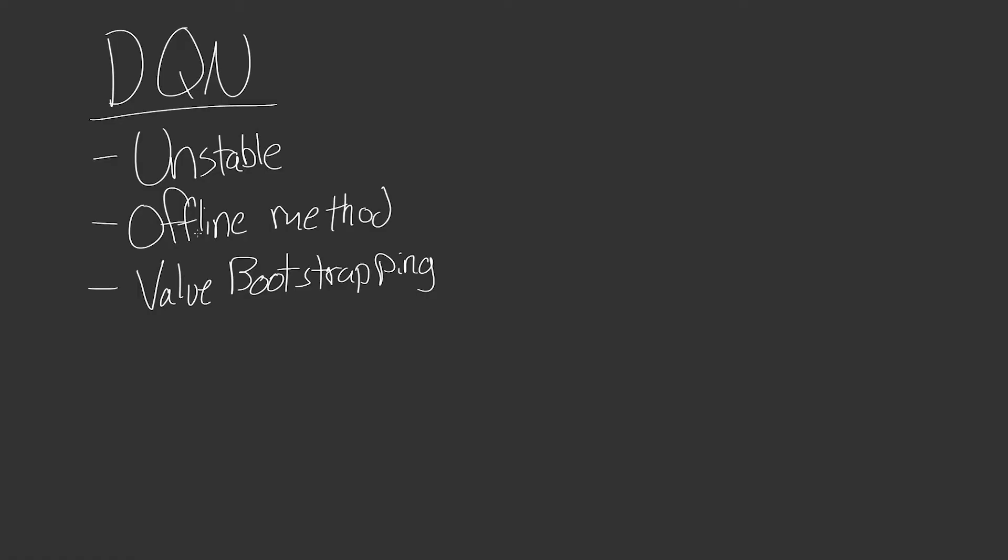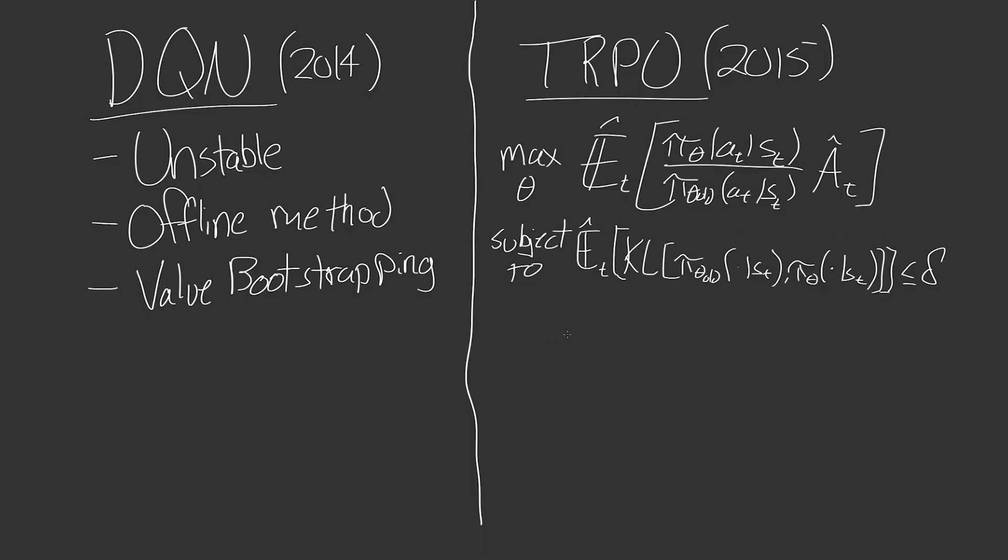By the way, I will get back into PPO. Trust me. But this is an important precursor. So it's an offline method, which means it learns from data from previous policies or other policies. And it also is a policy iteration method, which means it uses value bootstrapping. You don't need to know the details of what these things mean. But what you should understand is essentially DQN is really great for a lot of things. But because of the way it does this, it is very data efficient. But the cost is that it's very unstable and it can't learn maybe some difficult environments because of that instability.